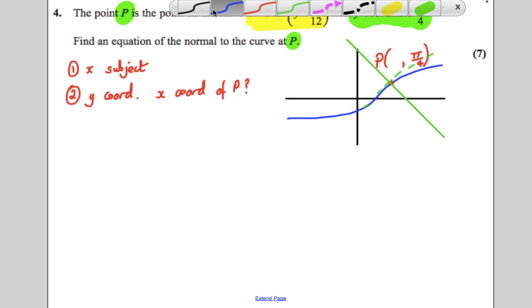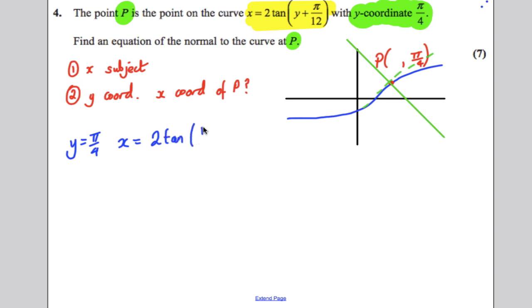So let's get ourselves the first easy mark. Firstly, let's find what the x coordinate of P is. So when y is pi by 4, x would be equal to substituting pi by 4 in there, 2 tan of pi by 4 plus pi by 12. All you've got to do is tap that into your calculator, obviously making sure your calculator is in radiance mode. And doing that, you get yourself 2 root 3, x is 2 root 3. Do not decimalise this. Leave it as a third, leave it in exact form. So you've got the x and the y coordinate.